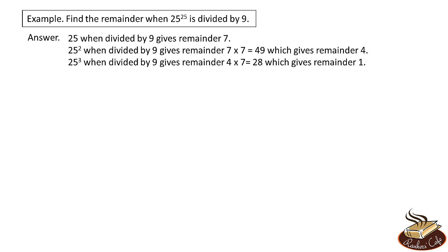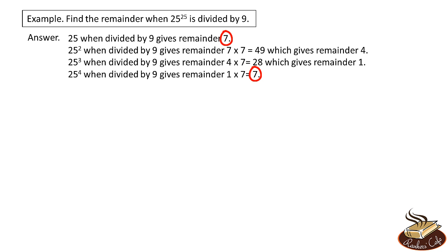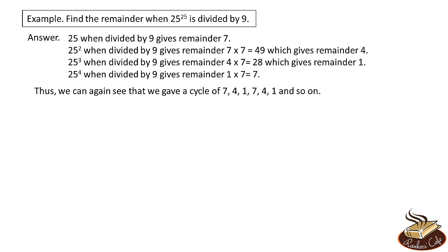25 cubed when divided by 9 gives a remainder of 4 times 7, that is 28, which has a remainder of 1. 25 raised to the power 4 when divided by 9 gives a remainder of 1 times 7, that is 7. So our cycle has started repeating — the first remainder was 7, and now at the fourth power we again get a remainder of 7. So the cycle when powers of 25 are divided by 9 is 7, 4, 1, 7, 4, 1, and so on. Again the cyclicity is 3.